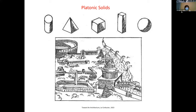These Platonic solids — this diagram is drawn by Corbusier — represent the world view of the time. We call these basic or primitive geometry: the Platonic solids. You'll see a lot of these volumes in the architecture of that period.